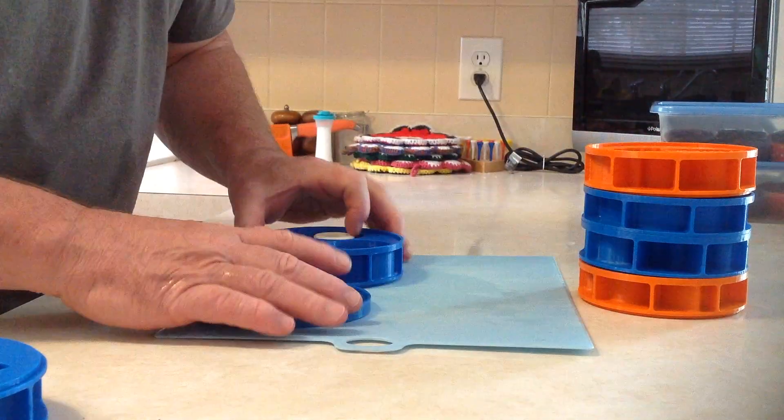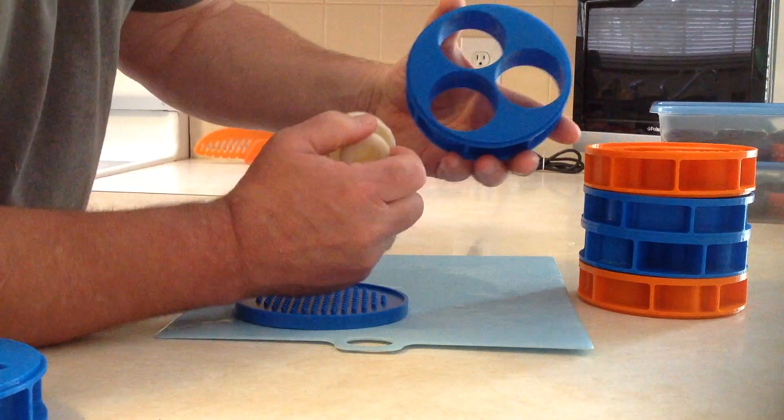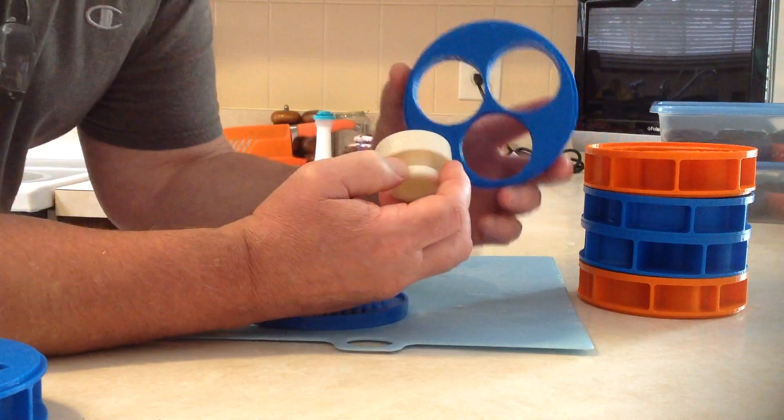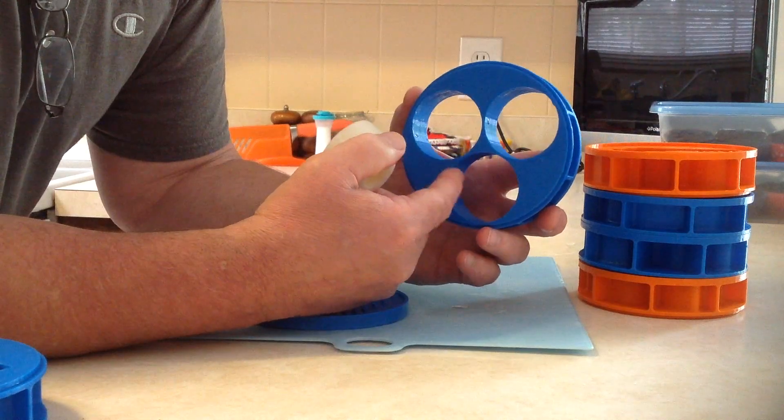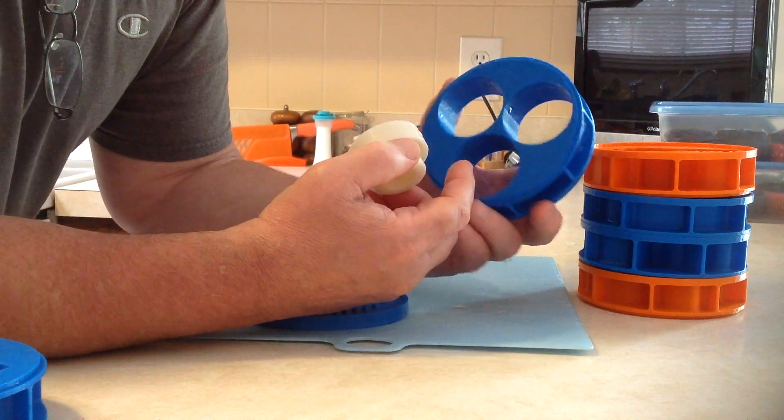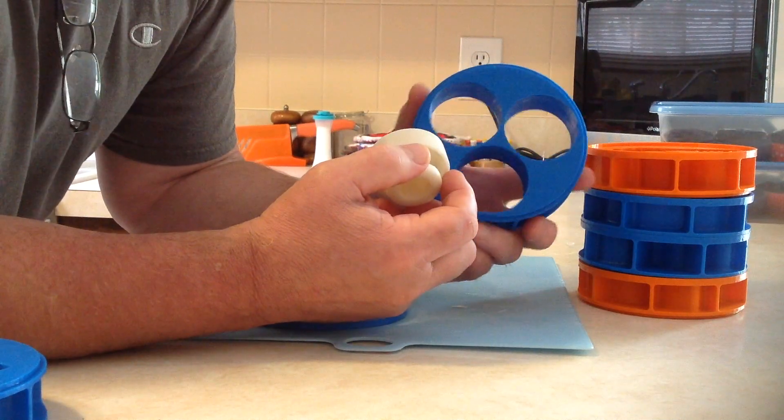the next thing is the Perfect Patty Shaper slider. What this allows you to do is to make anything you want with it. You can smash it down like you're going to make a steak burger.